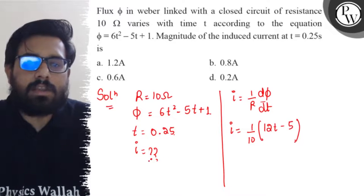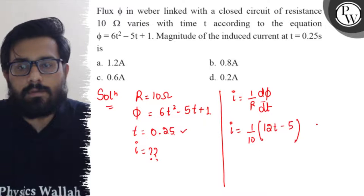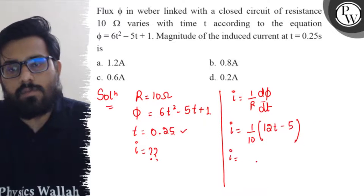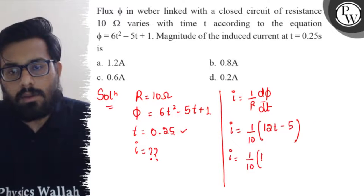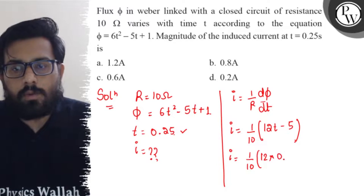So we have to calculate the induced current at t = 0.25. So putting down the values i = 1/10 × (12 × 0.25).